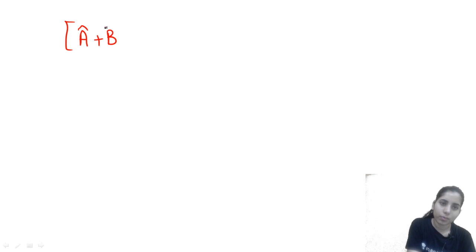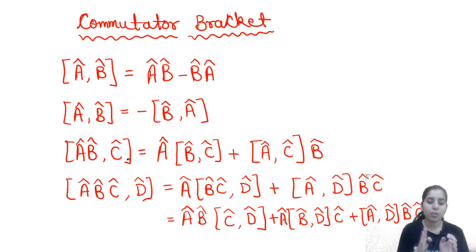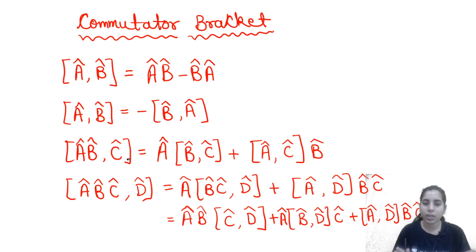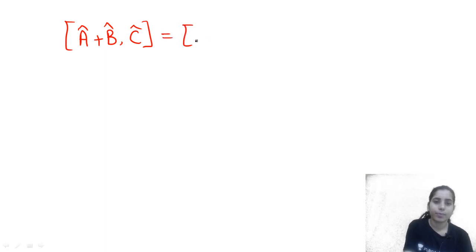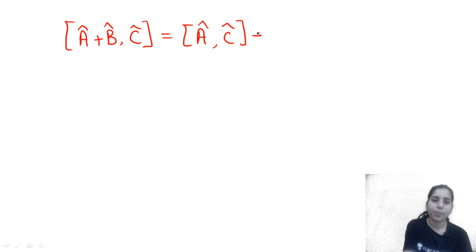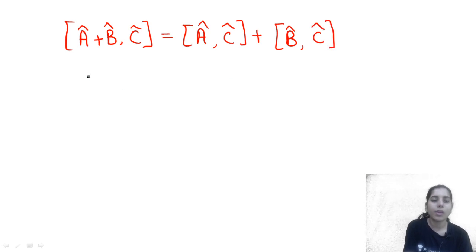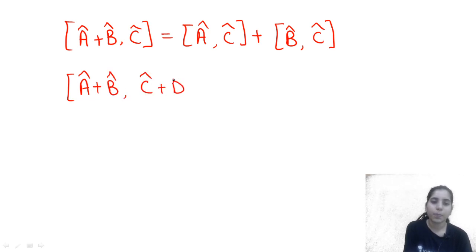Similarly, when the product is present on the right side, the same rule applies - take the operator outside in the same direction; you cannot change this direction. The result simplifies to [A,C] plus [B,C], since it was a plus sign.